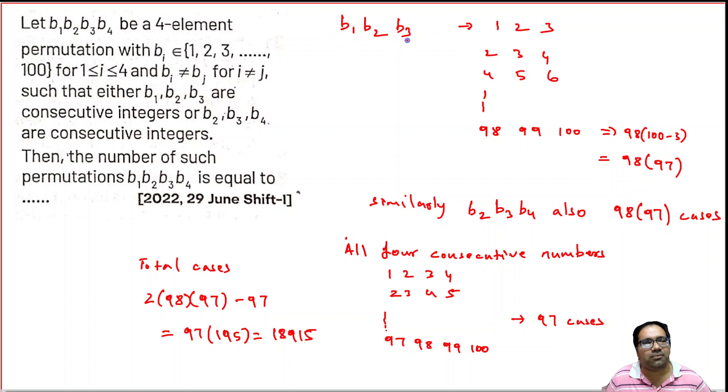So if B1, B2, B3 are continuous consecutive numbers, that means we can create 98 into 97, because we can create 98 consecutive three-digit numbers and the fourth number can be any one of the remaining 97 numbers, whichever are not used in these three consecutive numbers.